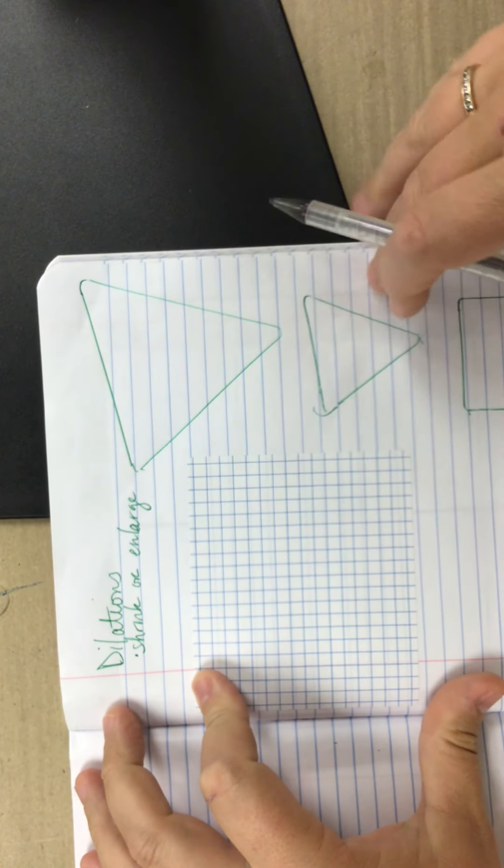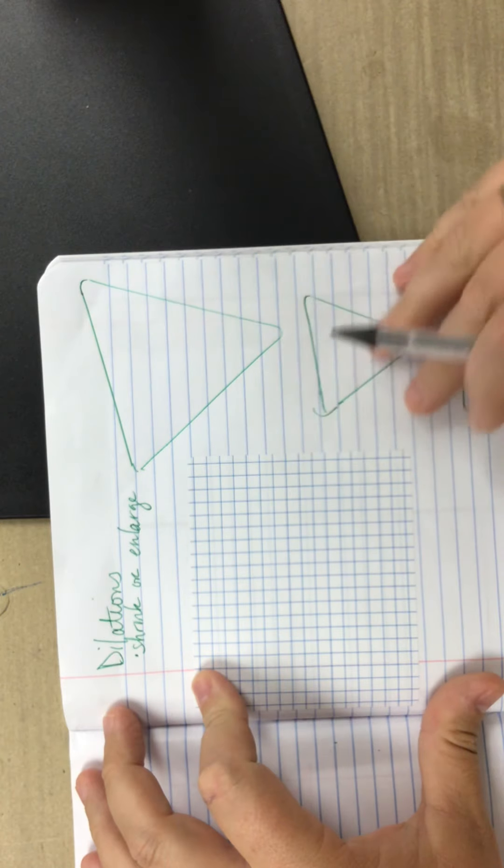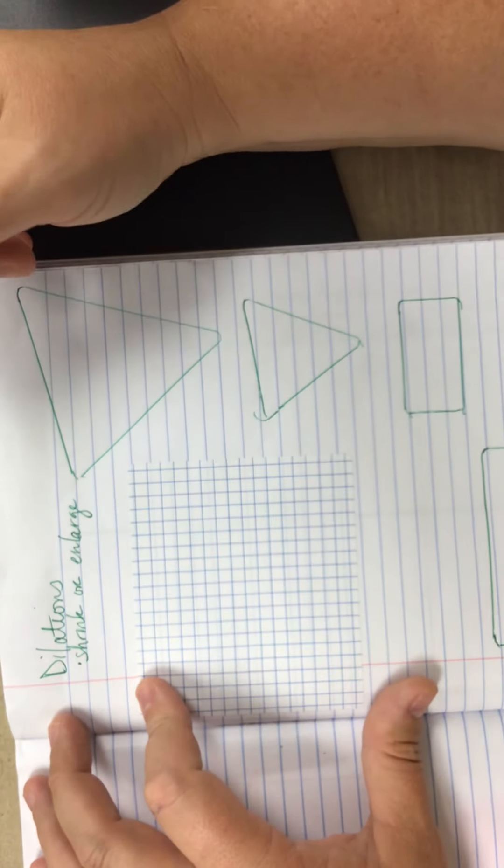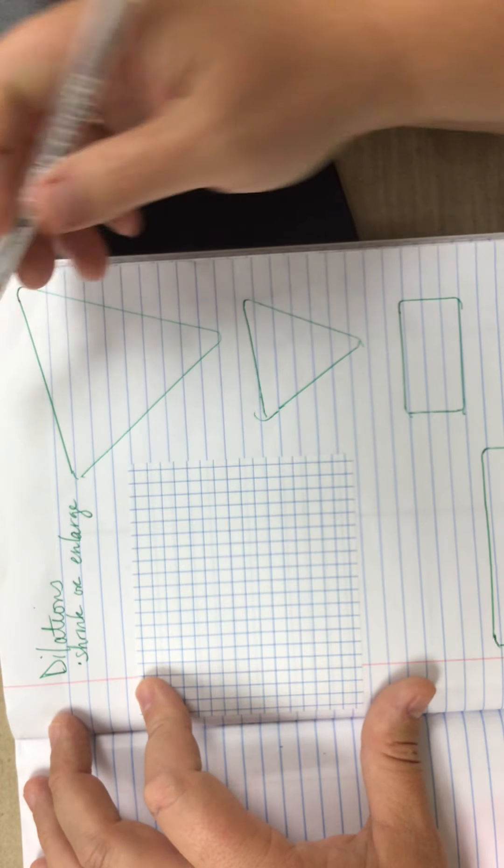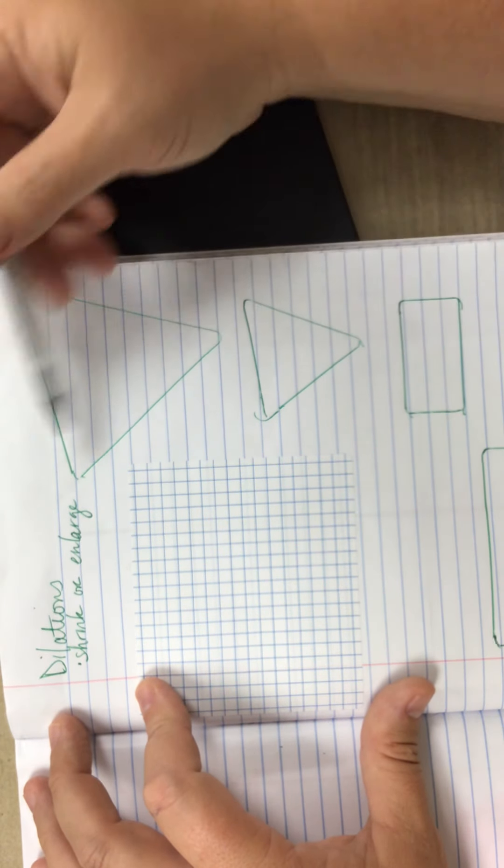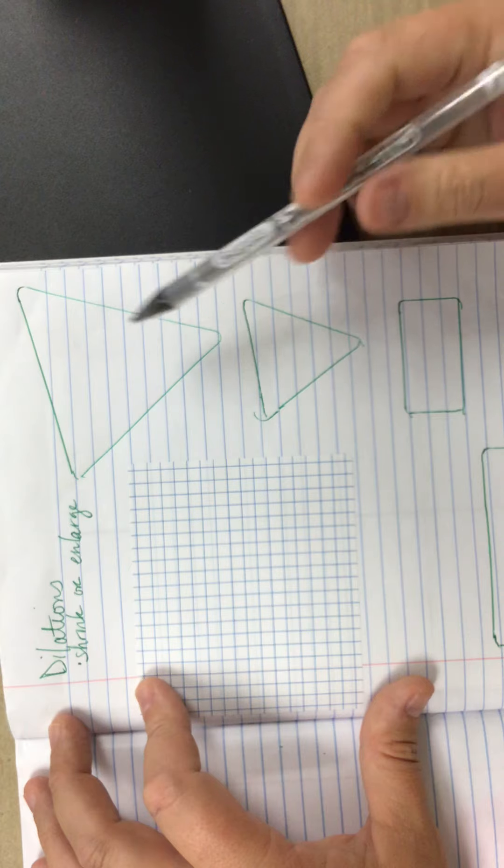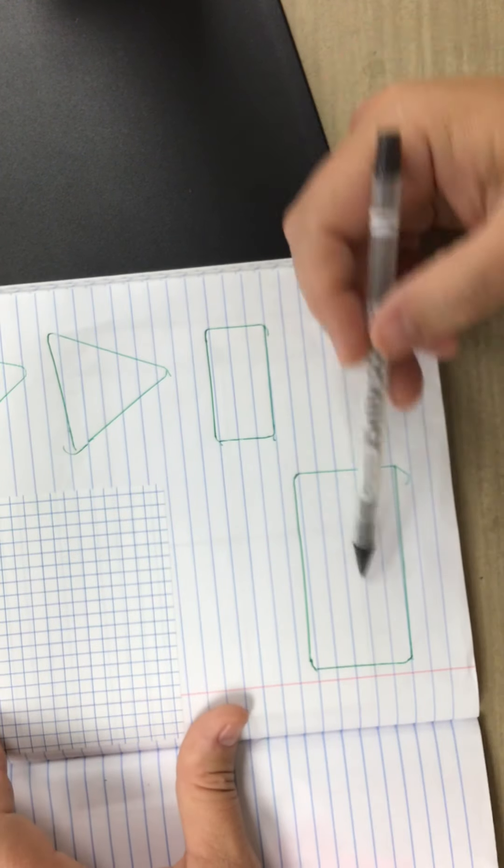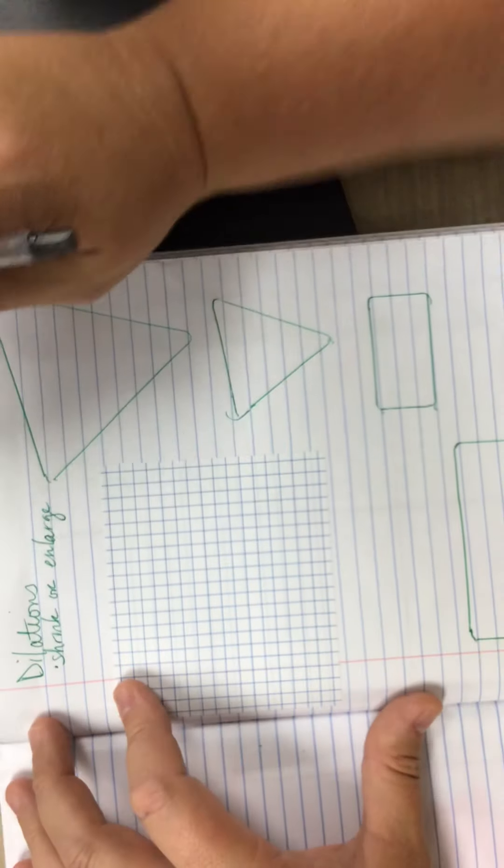So on the paper here, you can see on the right side, or even toward the bottom, I drew two examples of a dilation. Notice my triangle enlarged, or if you look at it from the big one to the small one, my rectangle shrank.